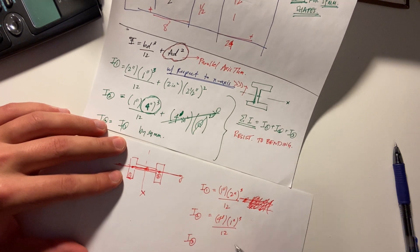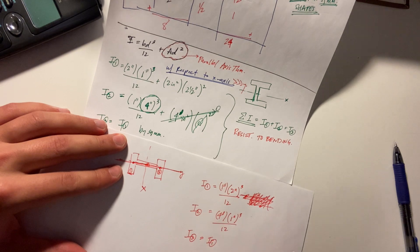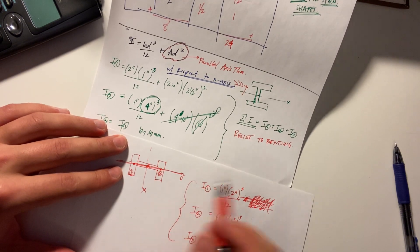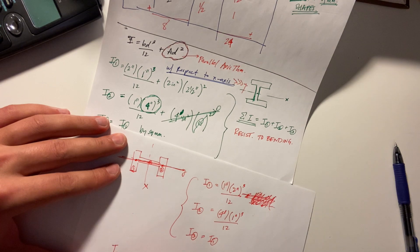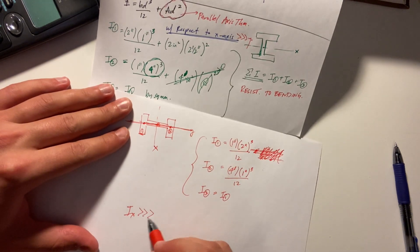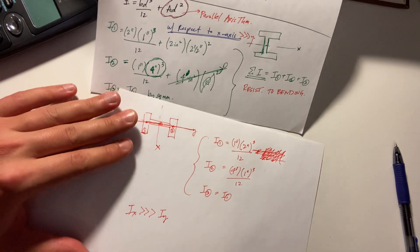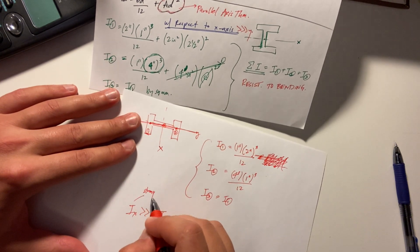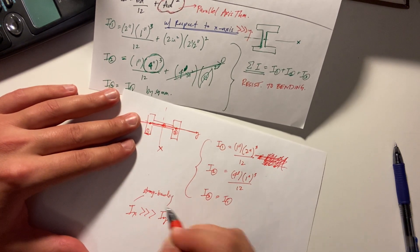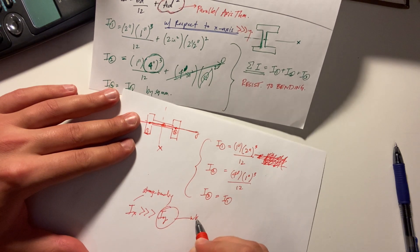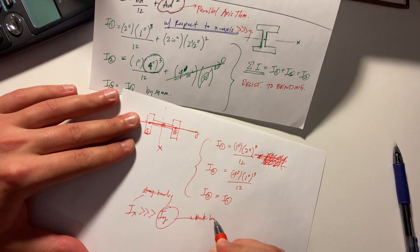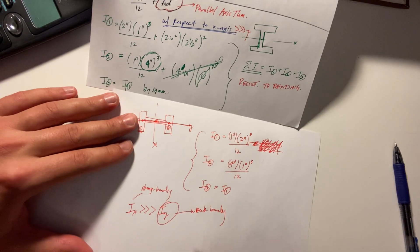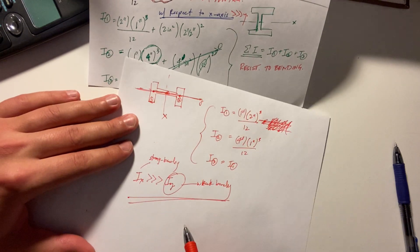i1 i2 is basically what was that four inches times an inch cubed over 12 and your i3 is i1 again calc that out and you'll find ix way bigger than iy so what does that tell you so this is called strong bending that's called weak bending and now you know why now you know why we always want to orient this about the strong axis this x-axis